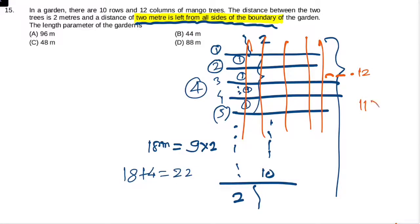Total value is 11 × 2 = 22. And 2 meters space is left from the left side and 2 meters from the right side. So total space is 22 plus 4, that implies 26.